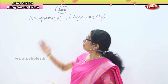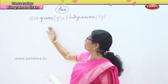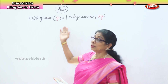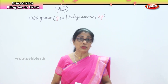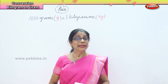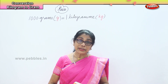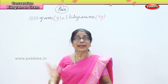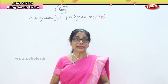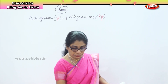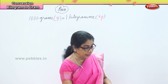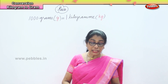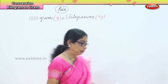In mass, we learn that 1000 grams is equal to 1 kilogram. Let us learn to convert kilograms to grams — that's what we are going to do: converting kilograms into grams.